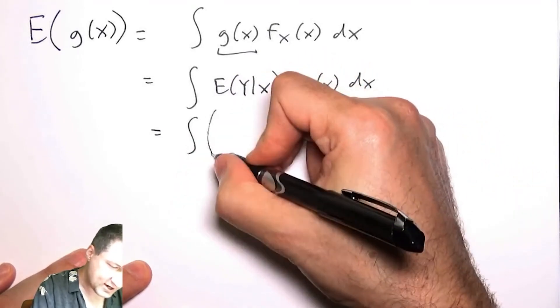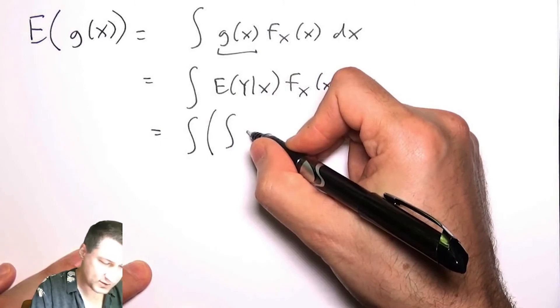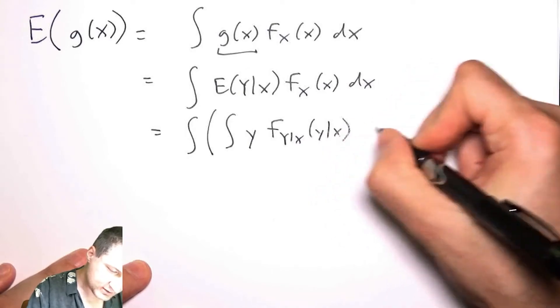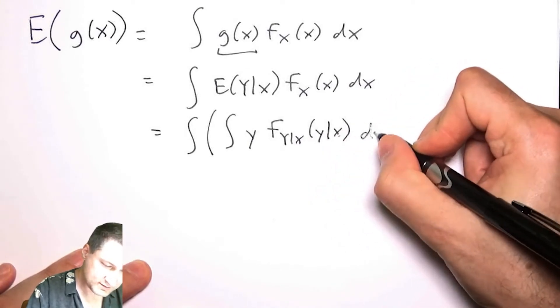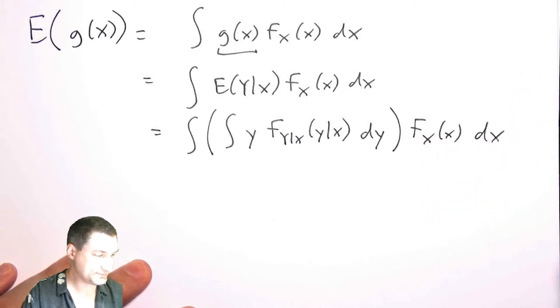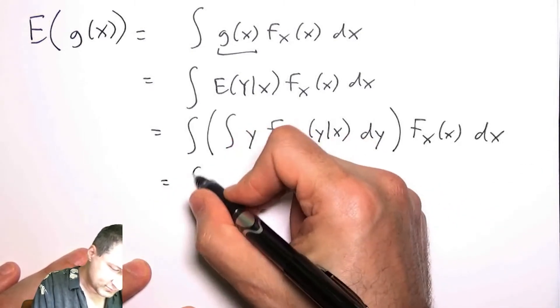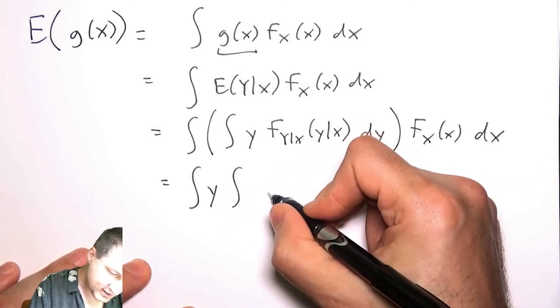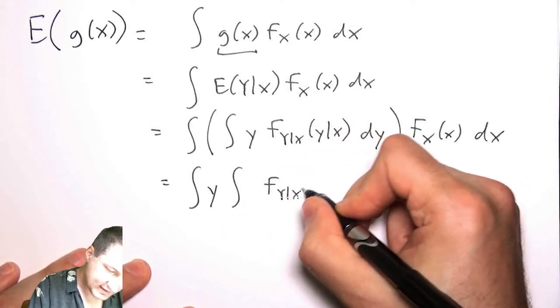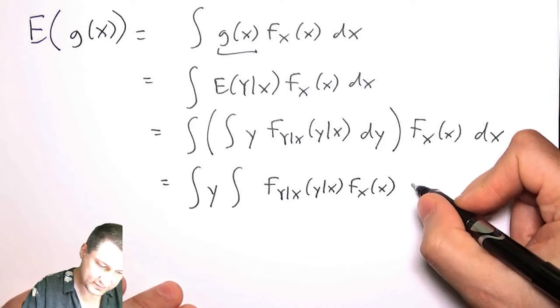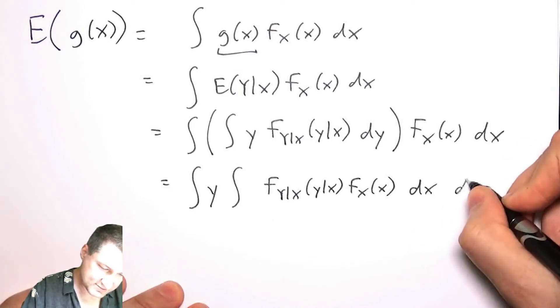What is this expected value? Well, this is actually now another integral. This is like saying I take y times the conditional pdf dy. Then I have the remaining outside part dx. Now I can say, I'm going to move the integrals around, and I'm going to have in here a conditional part and a marginal part, and this is like dx dy.